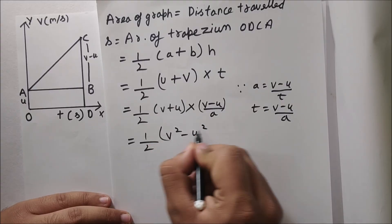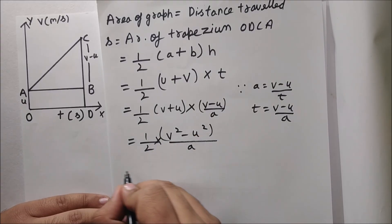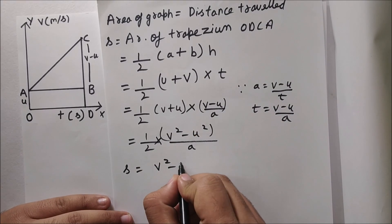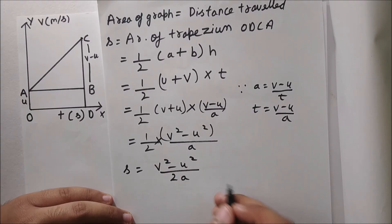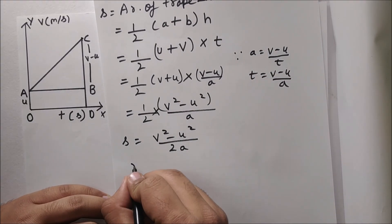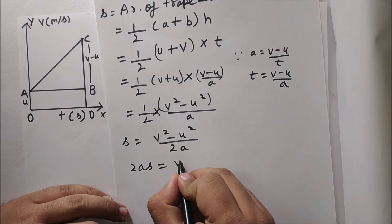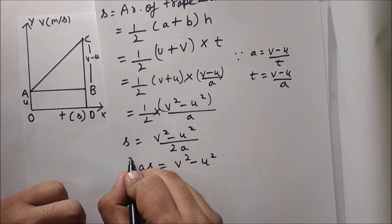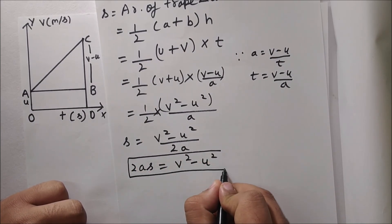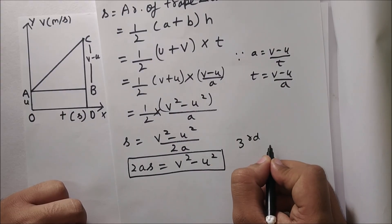And here if we write u plus v or v plus u, it's the same thing. So half into, now it has become v square minus u square because it was v plus u and v minus u. So s equals to v square minus u square upon 2a.